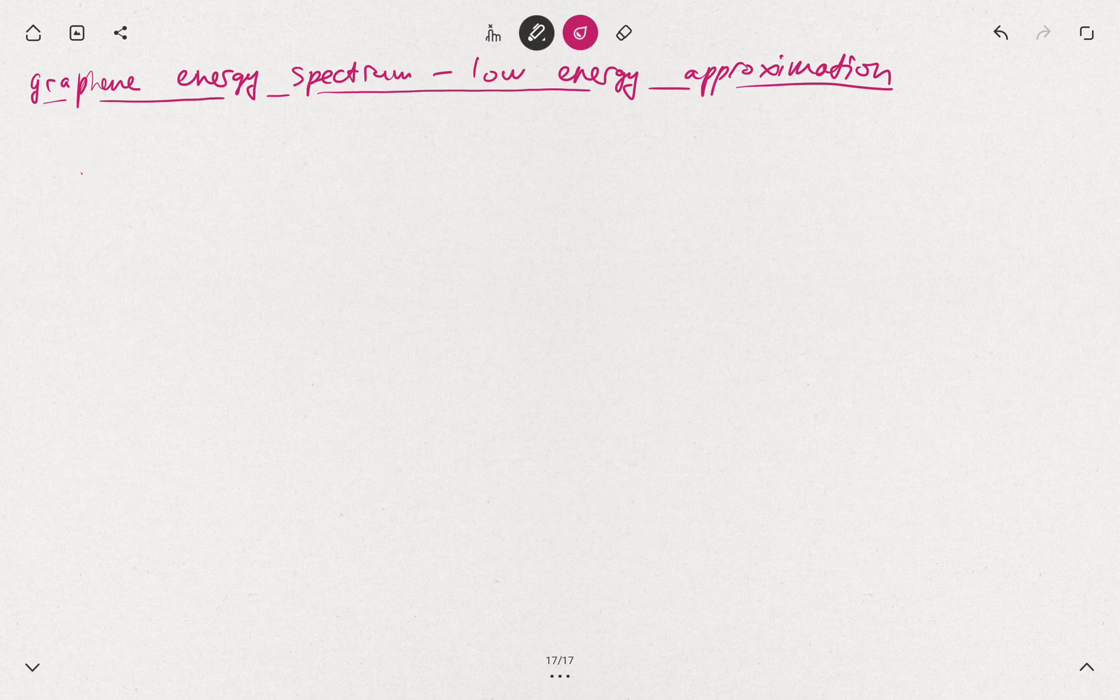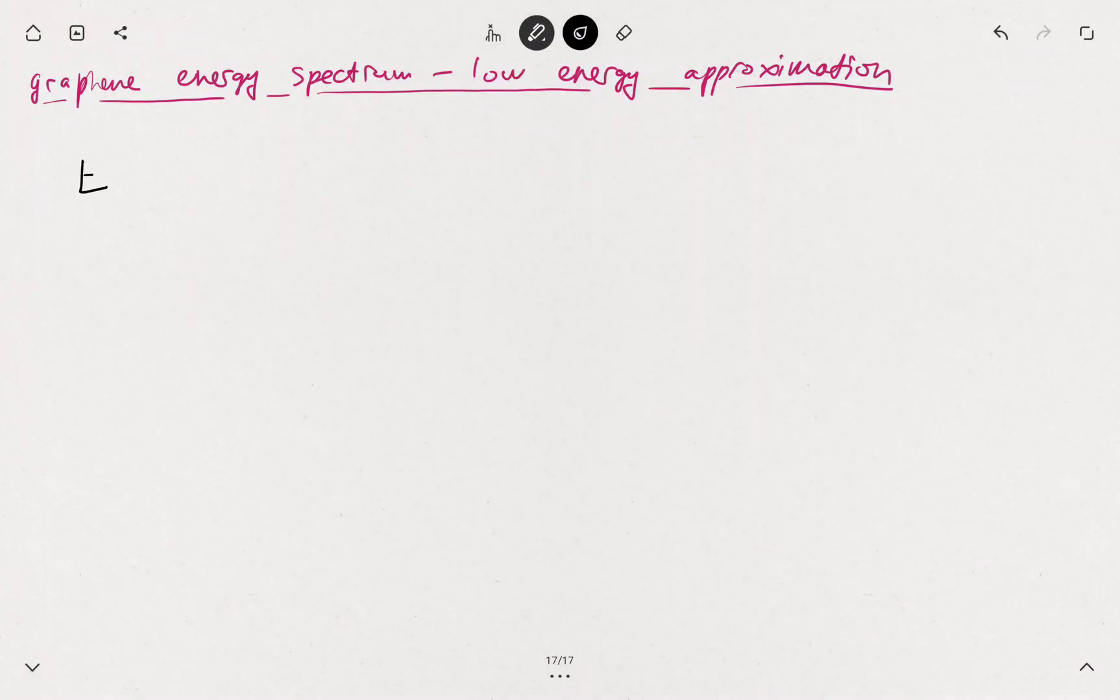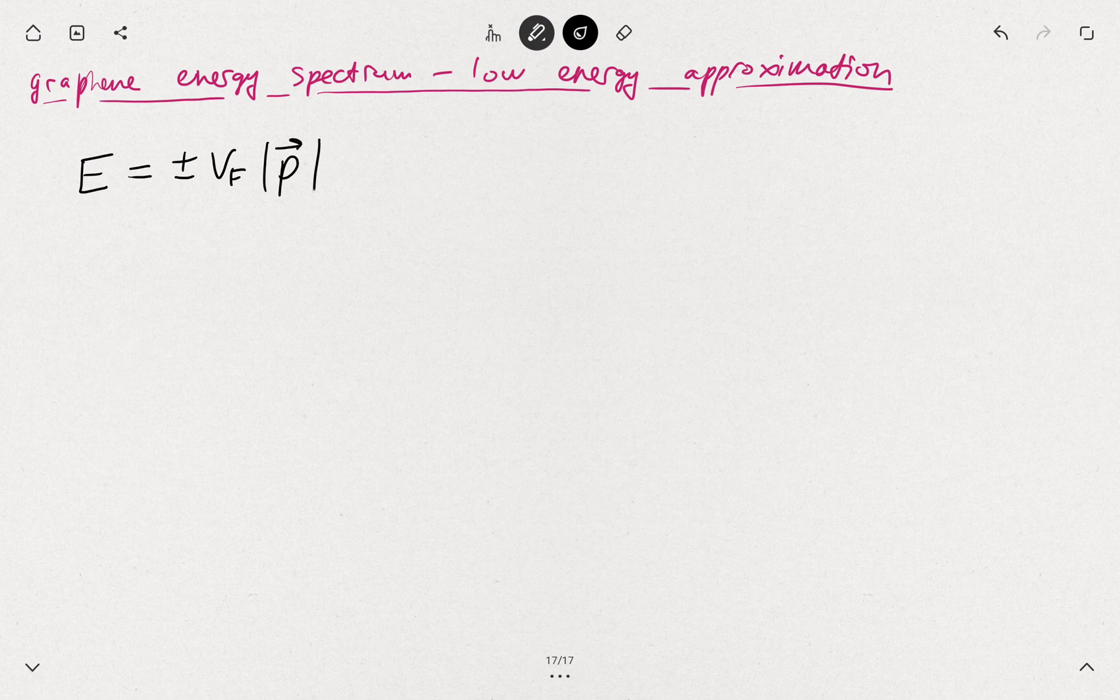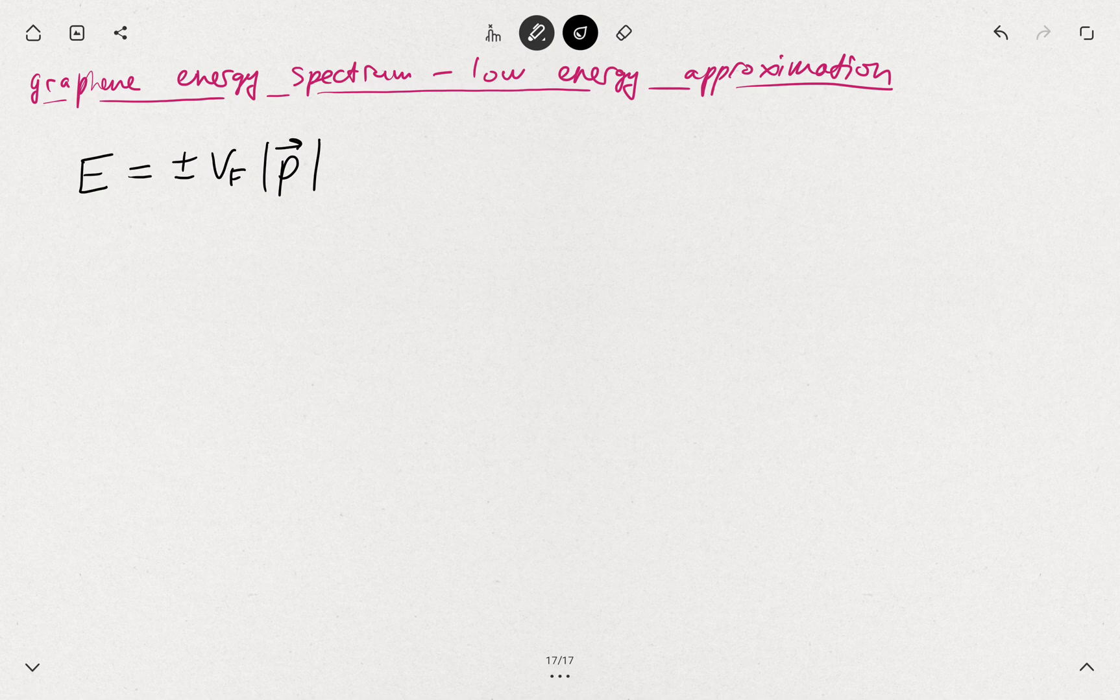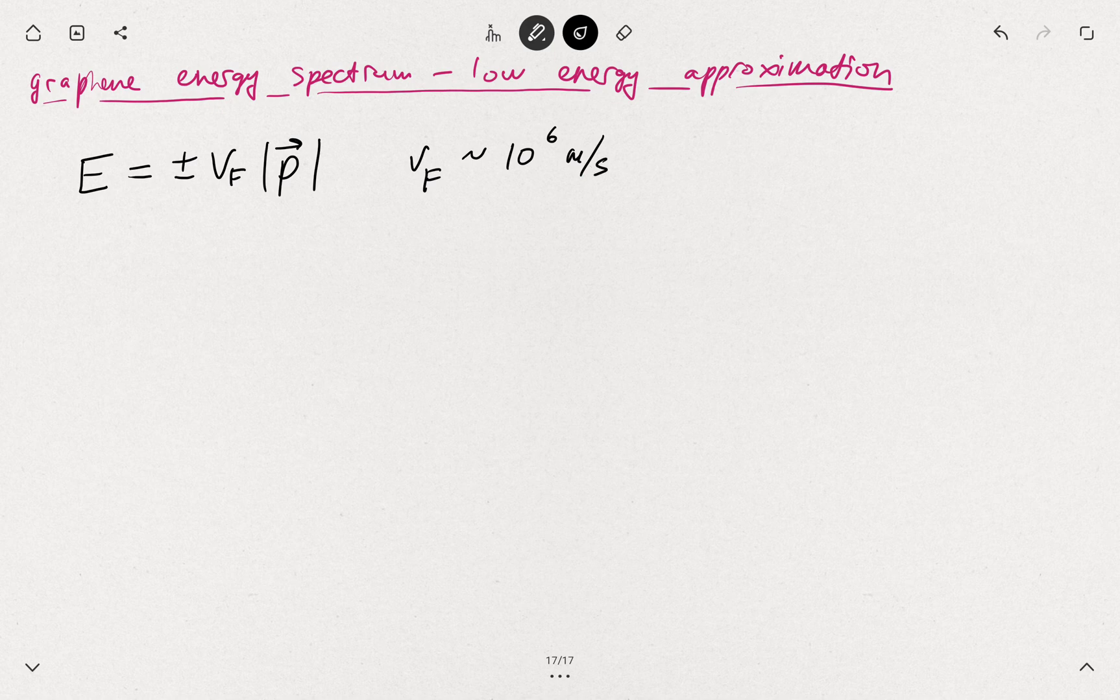So in the vicinity of the Dirac points, the energy dispersion relation is linear and has a form of E = ± vF|p|. The Fermi velocity in graphene is approximately 10^6 meters per second, so it's quite fast electrons.